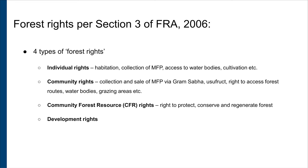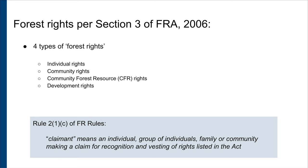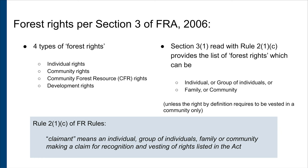Now let us turn to Section 3 to understand the kinds of forest rights recognized by the law. Section 3 lists together for the first time all the different kinds of forest rights which were scattered across various laws, rules, court orders, circulars, etc., in one place. An exhaustive list of 13 rights is listed in Section 3 and summarized on screen. These forest rights can be broadly divided into individual forest rights, community forest rights, and community forest resource rights. Under the mechanism provided by the FRA, any and all of the rights under Section 3 can be claimed by the Schedule Tribes and OTFDs as individual rights or community rights, or as both kinds of rights overlapping on the same land and forest resources.